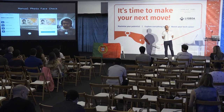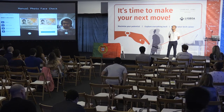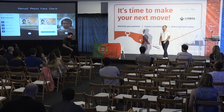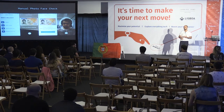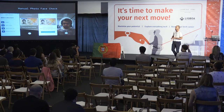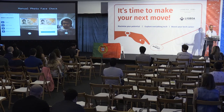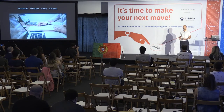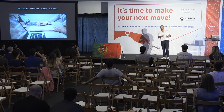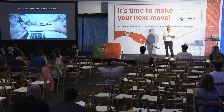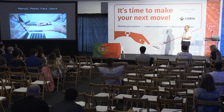We start out with the manual photo face check. This is the process for you to verify yourself online using the Onfido SDK. You start out on the screen from the left, upload a photo of your identity document - that can be a driving license, passport, or ID card - check if it's readable, and then take a selfie. In the beginning, this was a manual process where people would check if the selfie matched the photo on the document and if it wasn't tampered.